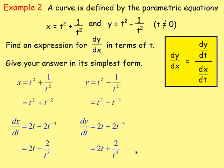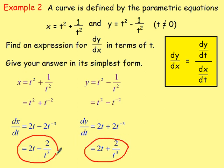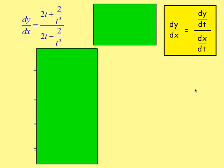From there, we need to work out dy/dx. dy/dx is dy/dt divided by dx/dt. So we have dy/dt over dx/dt, which gives us fractions within fractions — quite ugly.